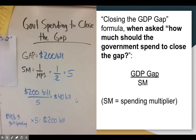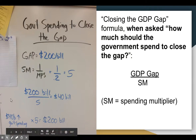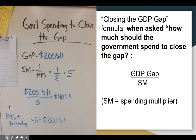That means in order to close a recessionary gap of $200 billion, the federal government only needs to spend $40 billion. Because of the spending multiplier, if the government spends $40 billion, it will multiply out into $200 billion. We can check our work: $40 billion times the multiplier of five equals a $200 billion increase in GDP. So the answer is: the government should increase its spending by $40 billion in order to close the $200 billion GDP gap.